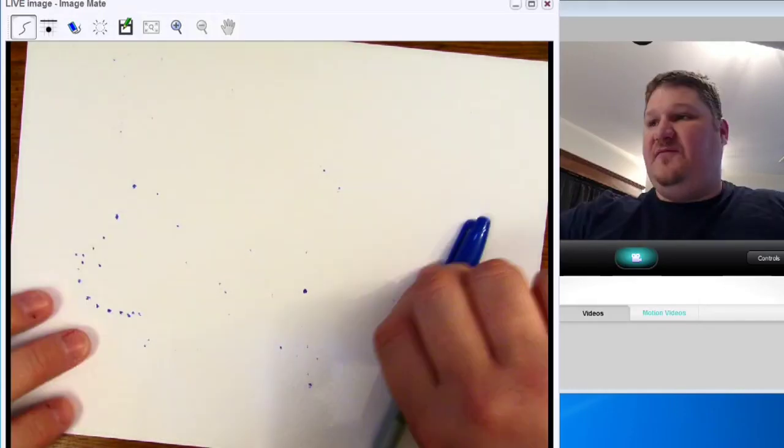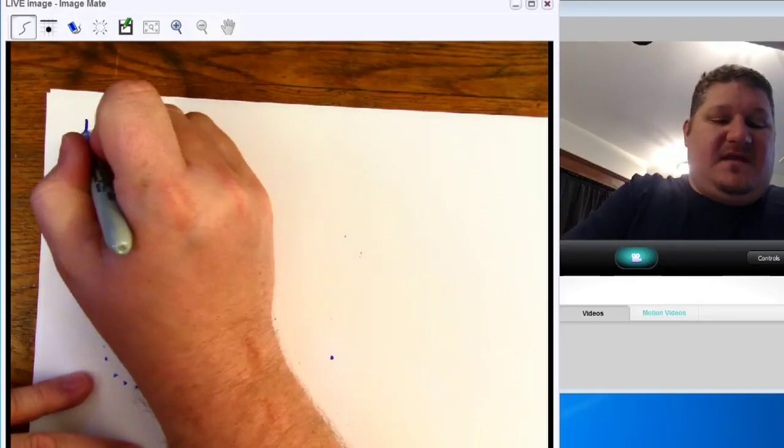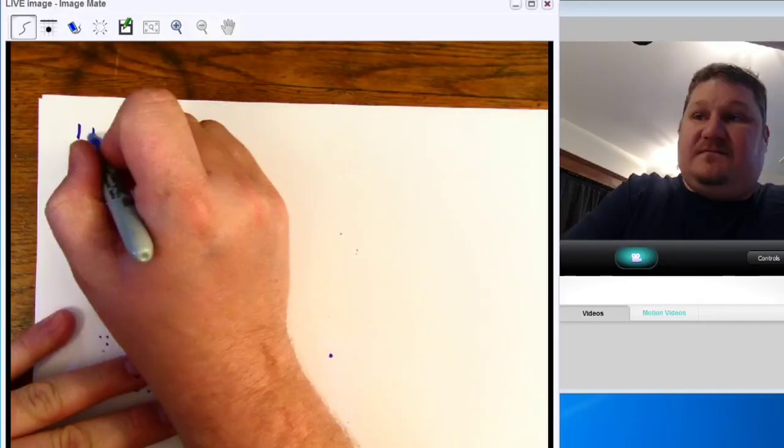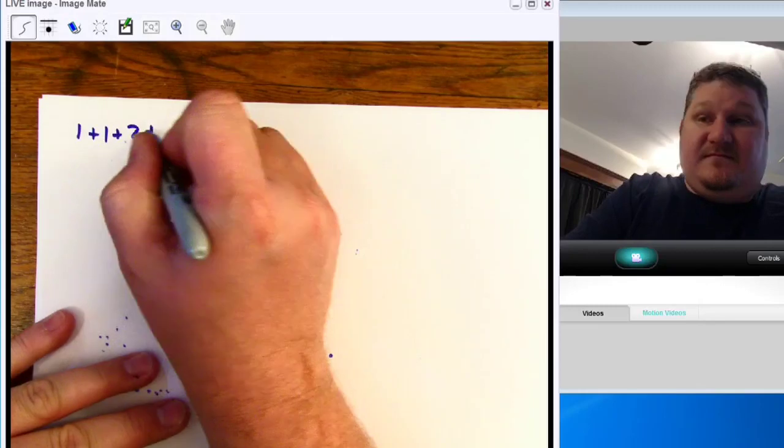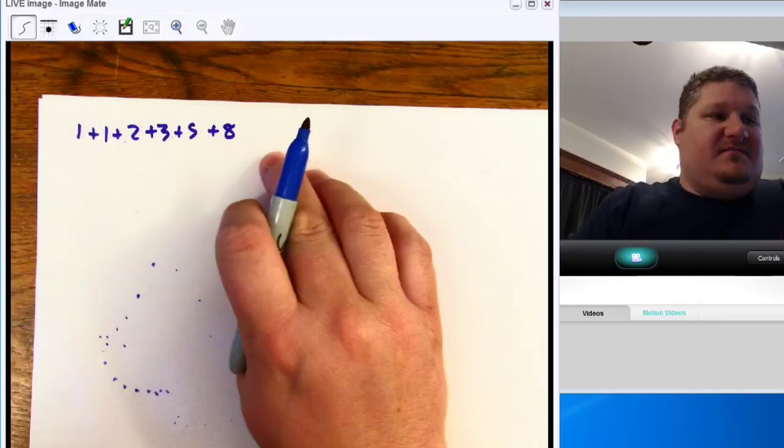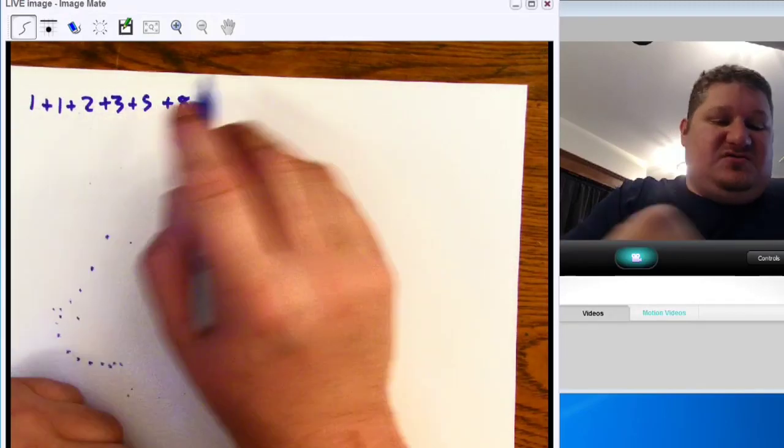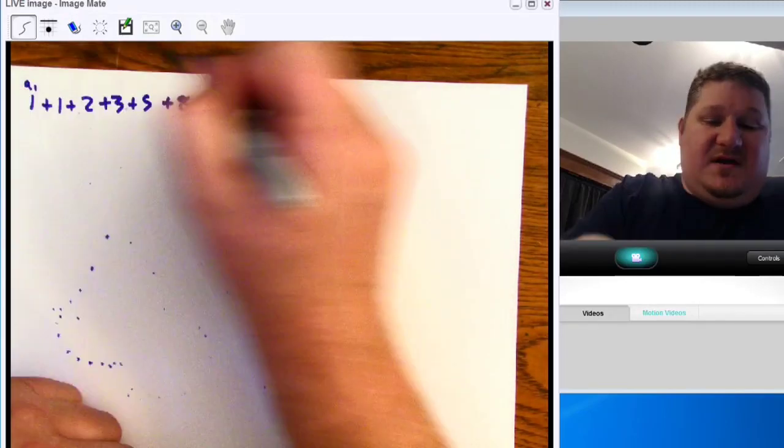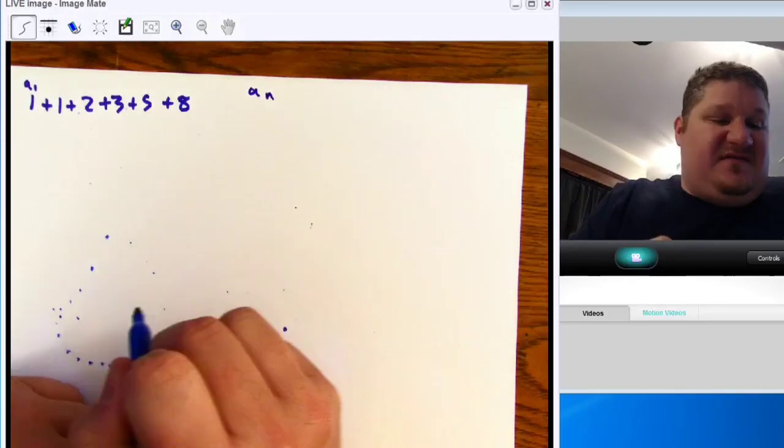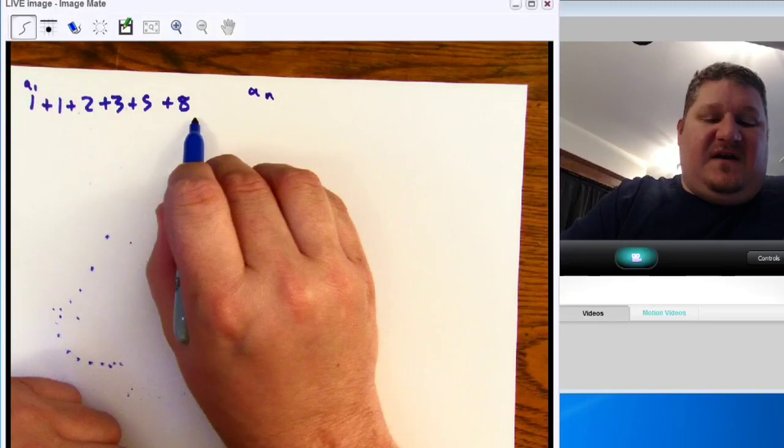And so, if we go into series, remember, series is nothing more than a sequence with plus signs rather than commas. So, in this case, I can get each of the individual terms from a sub 1 all the way to a sub n if I care. And this case, it's a finite series.